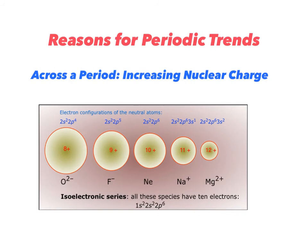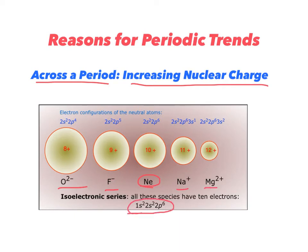It's important to know the reasons for the periodic trends. Anytime we go across a period, the reason for the trend will be increasing nuclear charge. I've got several different ions here — the oxide ion, fluoride ion, sodium ion, and magnesium ion, plus the noble gas neon. All of these have the same number of electrons with the configuration 1s2, 2s2, 2p6. But they don't have the same number of protons in the nucleus. The protons' positive charge attracts the negative electrons on the outside. The more protons in the nucleus — and magnesium has the most, with 12 protons — the greater the nuclear charge, which is the reason for the trends across a period.